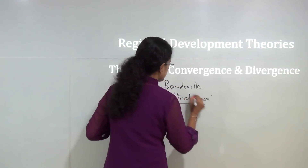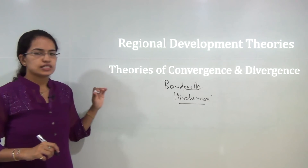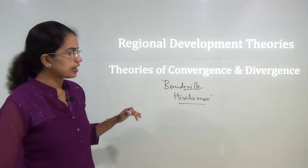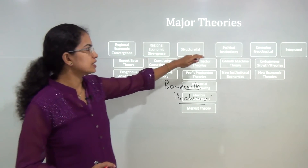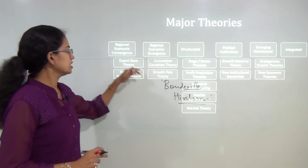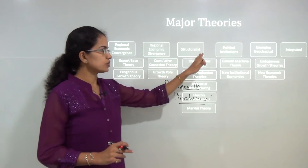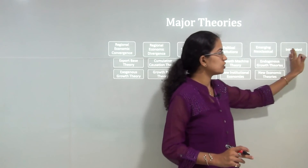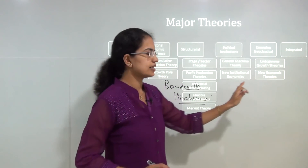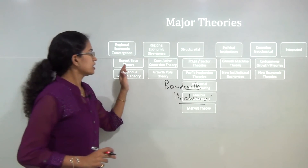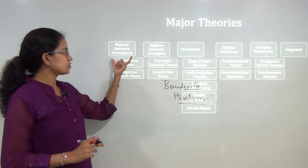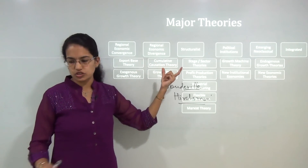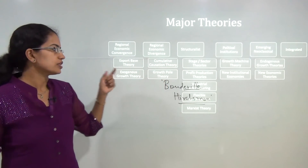When we try to classify the regional development theories, as we had seen, we classified them under six basic heads: convergence theory, divergence theory, structuralist theory, political institutions, emerging neoclassical models, and integrated approach. Today we will be understanding the two bases for the convergence and divergence theories.